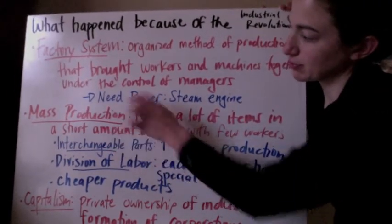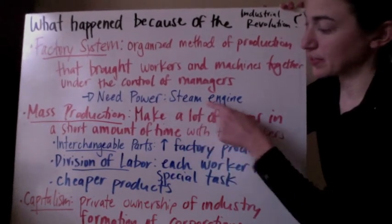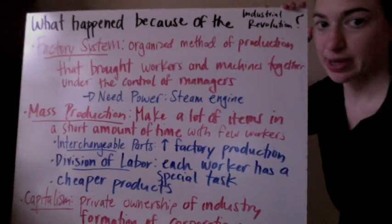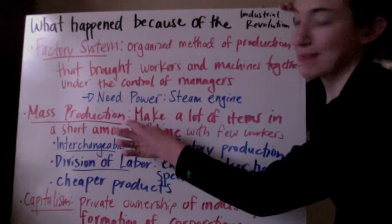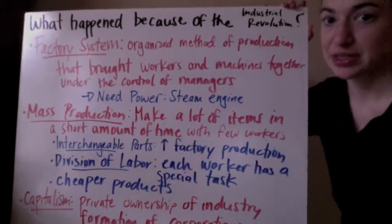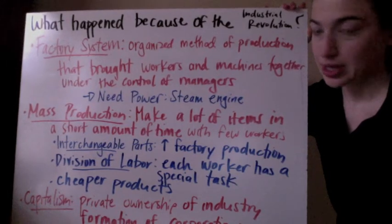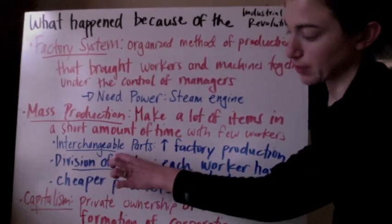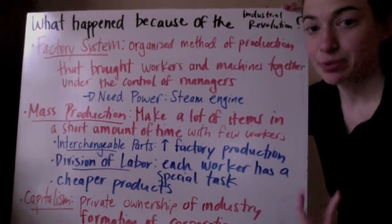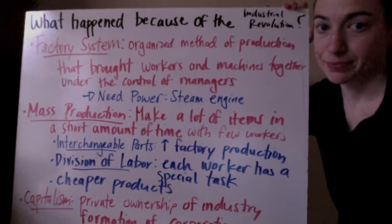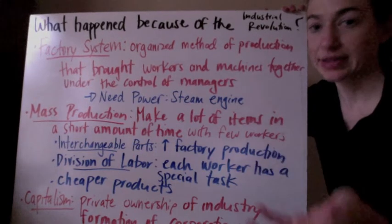The second thing that came out of the Industrial Revolution was mass production — still happening today. They make a lot of items in a short amount of time with few workers. This happened because of interchangeable parts, which made factories more productive. If a piece broke in one of the machines, they could just take the broken part out, put a new part in, and keep going.